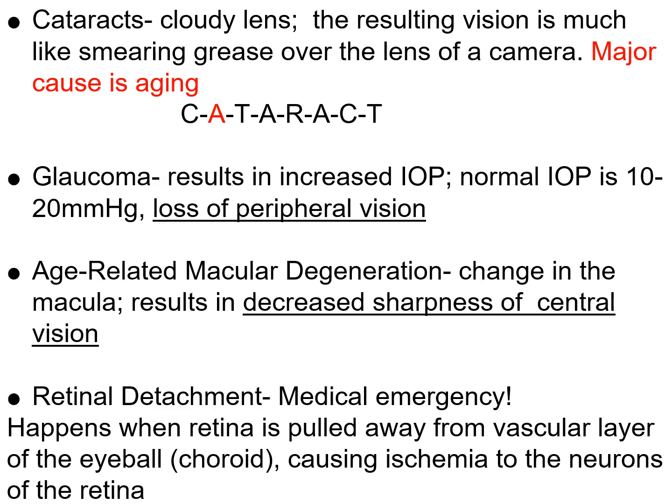When someone has cataracts, they have a cloudy lens — vision is much like smearing grease over the lens of a camera. A major cause of cataracts is aging, but it can also be due to metabolic abnormalities such as diabetes or excessive exposure to sunlight. In glaucoma, there is increased intraocular pressure. Normal intraocular pressure is 10 to 20 mmHg, with most people around 15 mmHg; greater than 24 mmHg is concerning. Glaucoma causes loss of peripheral vision — everything appears as if you're looking through a tunnel, giving you what we call tunnel vision.